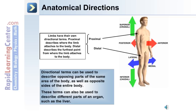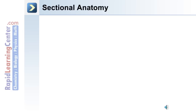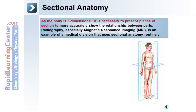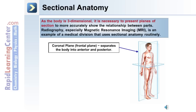Directional terms can be used to describe opposing parts of the same area of the body as well as opposite sides of the entire body. These terms can be used to describe different parts of an organ. Sectional anatomy is important terminology, especially for radiographic images. As the body is three-dimensional, it is necessary to present planes of section to more accurately show the relationship between two parts. MRI is an example of a medical modality that uses sectional anatomy routinely.